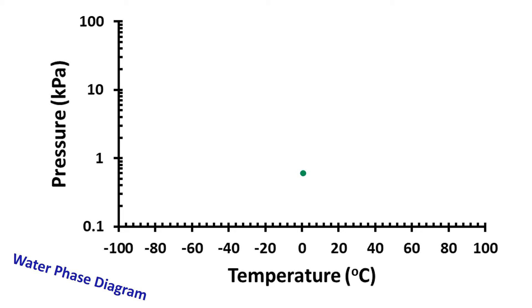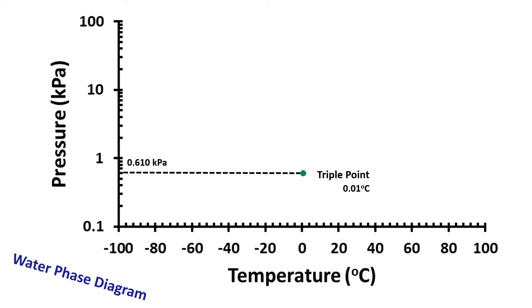First, we could consider the triple point of water. In thermodynamics, the triple point of a substance is the temperature and pressure at which the three phases — that is gas, liquid, and solid — of that substance coexist. The triple point of water is 0.01°C and 0.610 kilopascal.